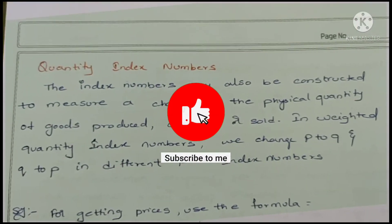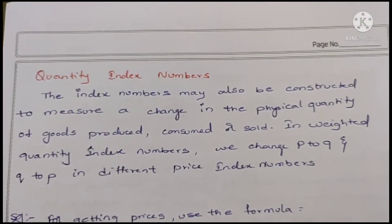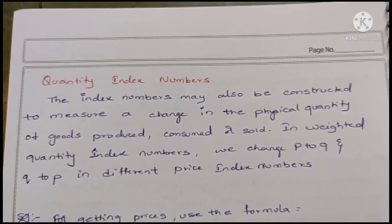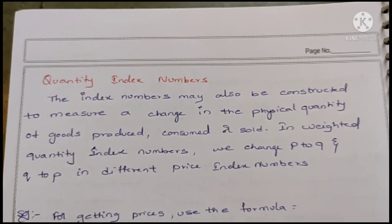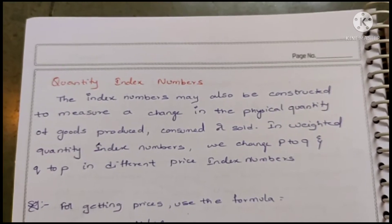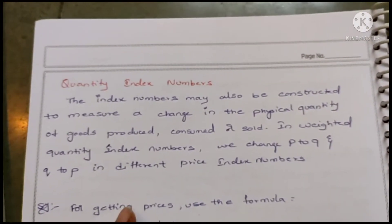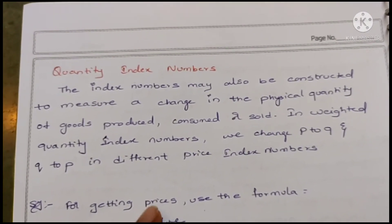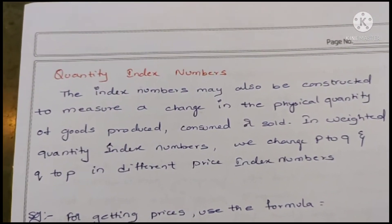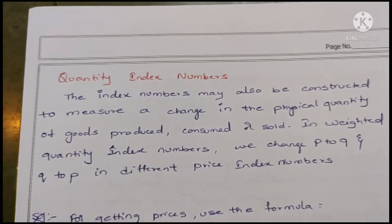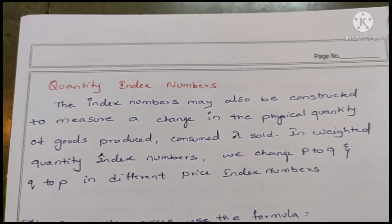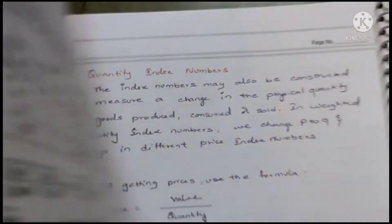Today we are going to discuss quantity index numbers. We have completed the price index numbers. The index numbers may also be constructed to measure a change in the physical quantity of goods produced, consumed, or sold. In weighted quantity index numbers, we change P to Q and Q to P in different price index number formulas — the same formulas, but in place of P we write Q and in place of Q we write P.